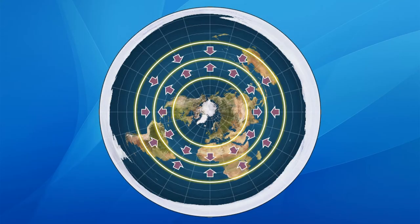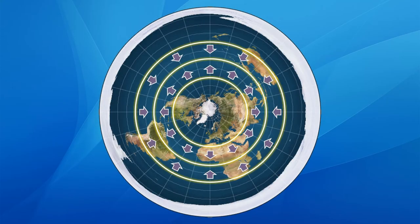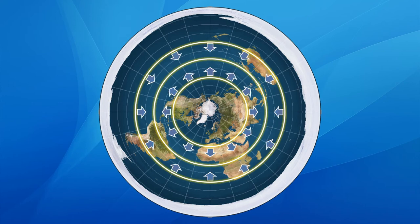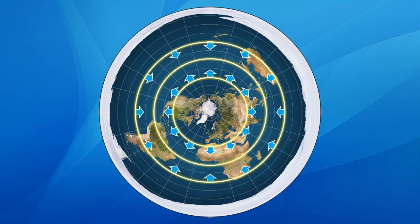But remember, the flat Earth community doesn't believe the Earth rotates. With that in mind, this is how these prevailing winds, moving from low to high pressure systems, should behave in a flat Earth that doesn't rotate.